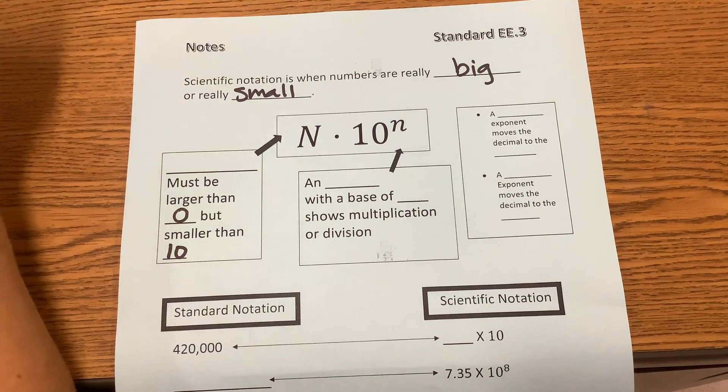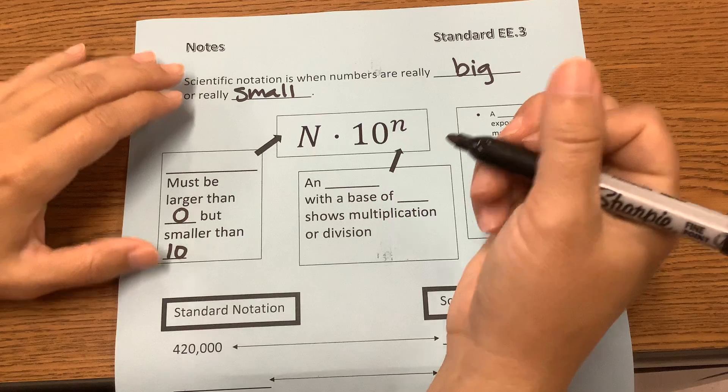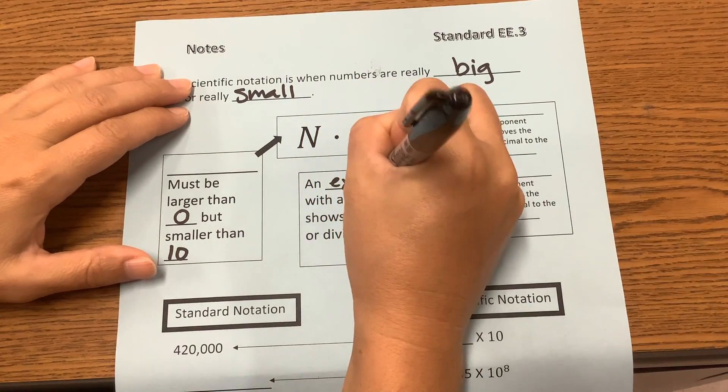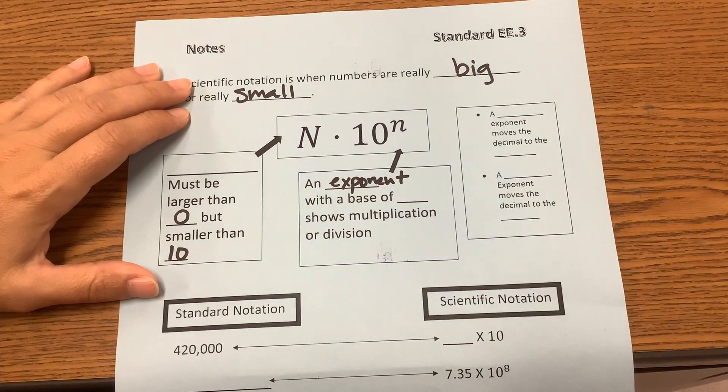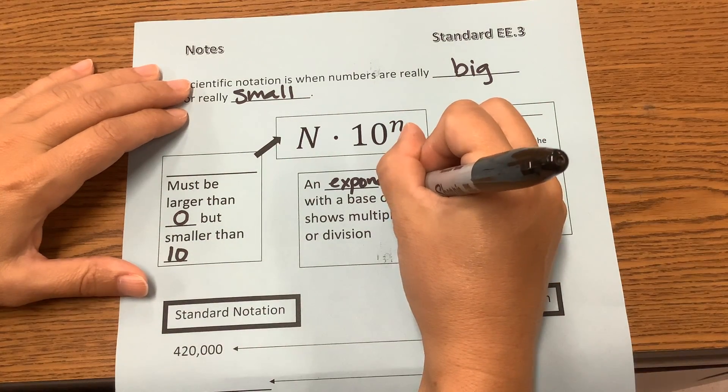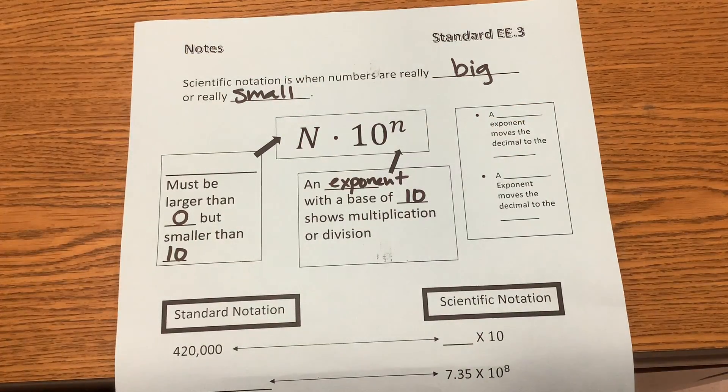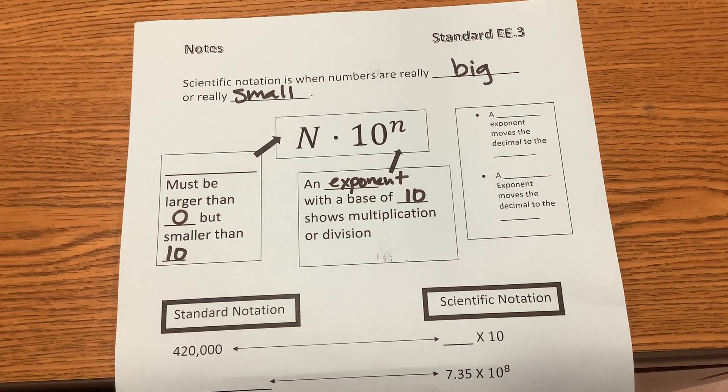Okay, and so an exponent with a base of 10 shows multiplication or division.